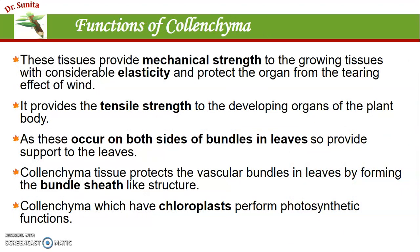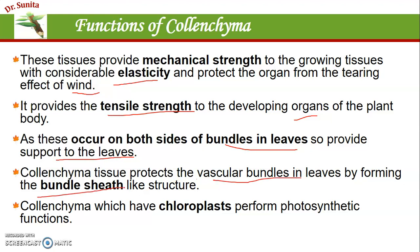Now the functions of colenchyma: the main function is to provide mechanical strength along with considerable elasticity. It provides mechanical strength but also has elasticity, so it can protect the organ from tearing due to the effect of wind — because if it were completely rigid, wind would tear it. It provides tensile strength for developing organs of the plant body. It is present on both sides of the vascular bundle in leaves, providing support to leaves. Colenchyma tissue also protects the vascular bundles, especially bundle sheaths present in monocot leaves.